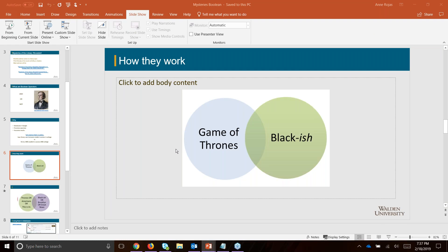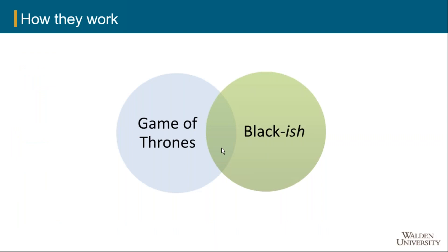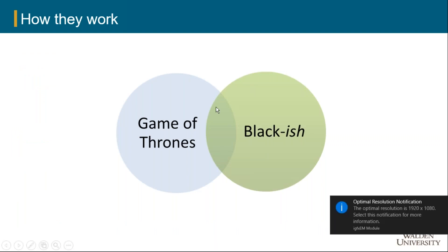Looking at our Venn diagram — if we're doing research on people who watch Game of Thrones AND Black-ish, even though it's counterintuitive, we're going to get just a limited number of results — the little bit of overlap of those two when we use AND. So AND is going to give me fewer results.